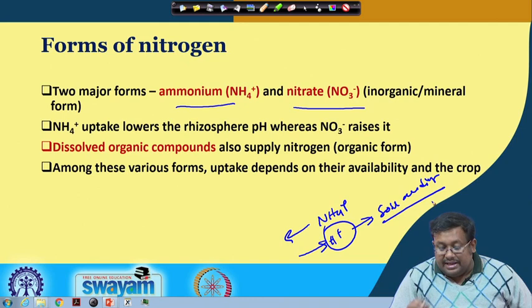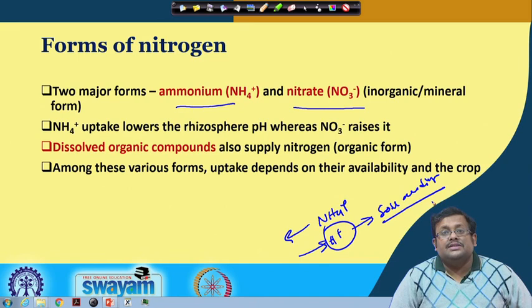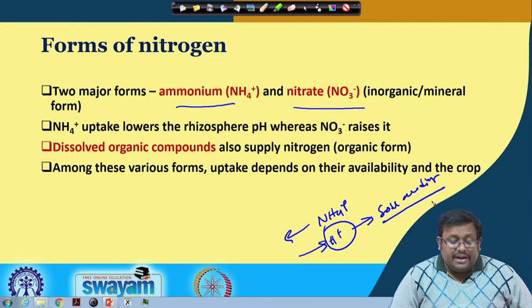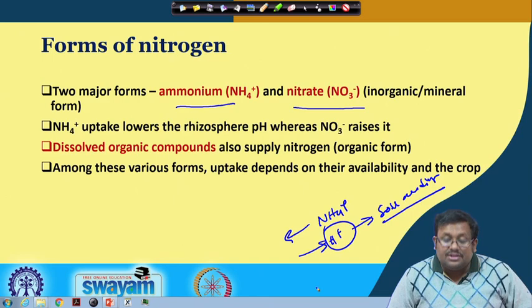The opposite effect is found in case of nitrate. When there is nitrate uptake, you will see the opposite effect — there will not be any reduction of pH. Dissolved organic compounds also supply nitrogen in organic forms, and among these various forms, uptake depends on the availability and the crop. We will see that later on.